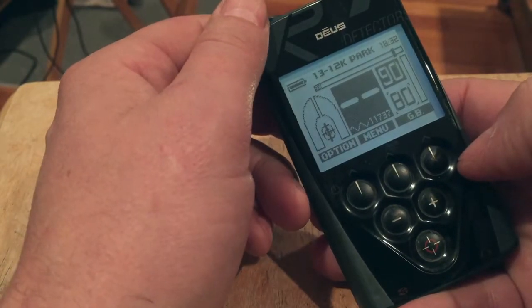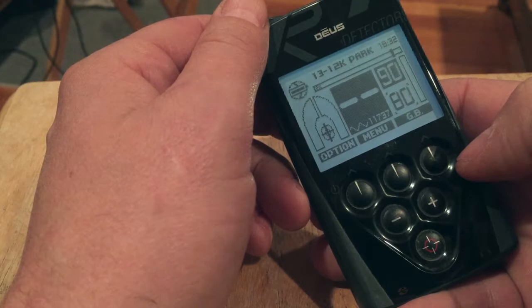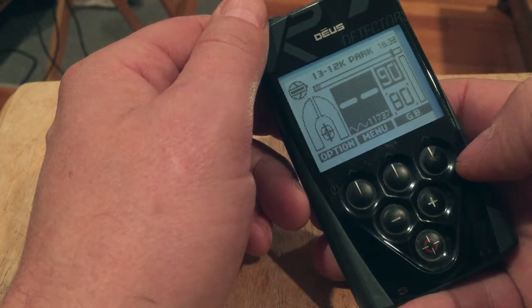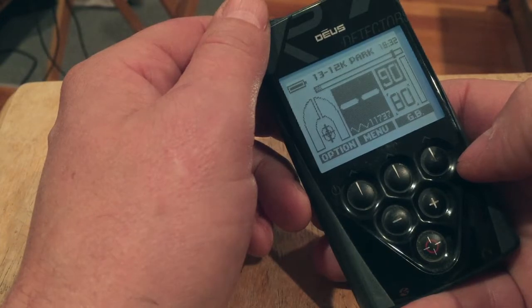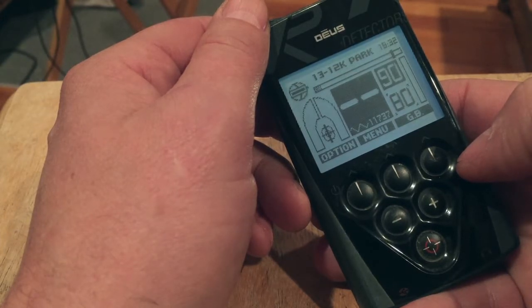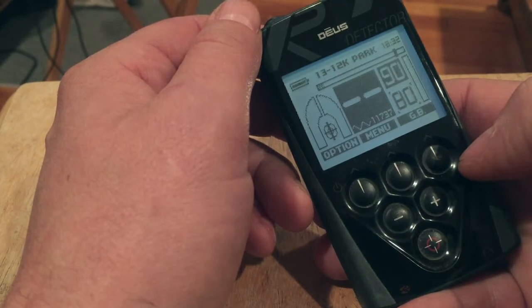What I'm going to share here today is how I go park hunting with the DEUS for deep coins. Because the DEUS moves really deep trash up a bit, like pull tabs and stuff, into the coin range.